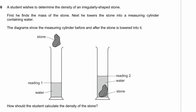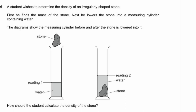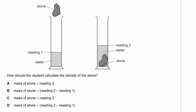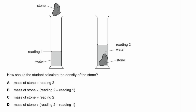Question 6. To find the density of an irregularly shaped stone, use density equals mass over volume. The volume of the stone is found by displacement: reading 2 (stone and water) minus reading 1 (water only). So the equation is mass of the stone divided by (volume reading 2 minus volume reading 1). That is option D.